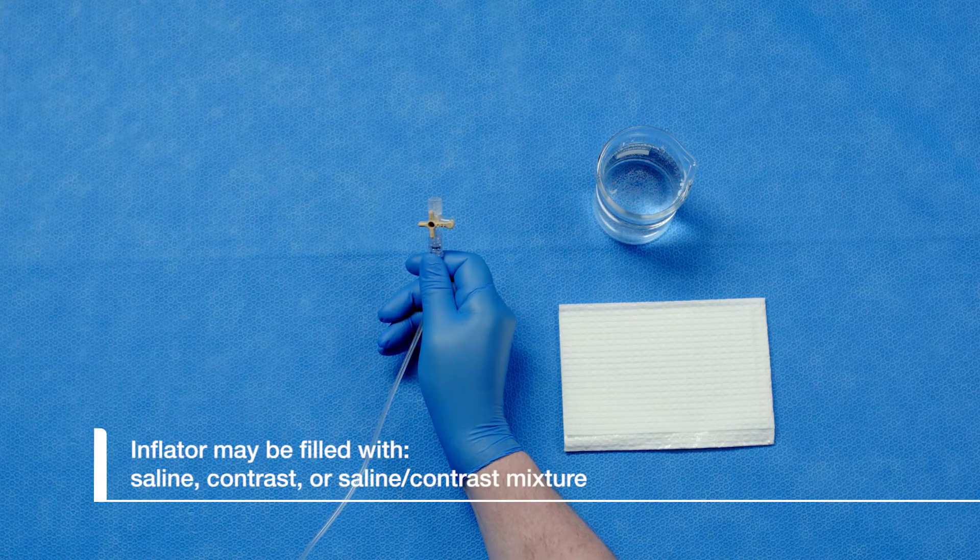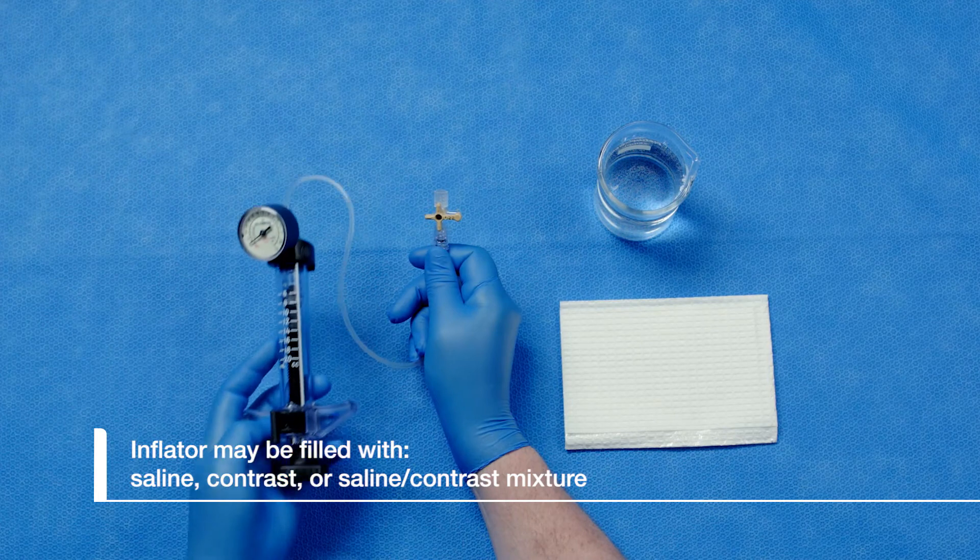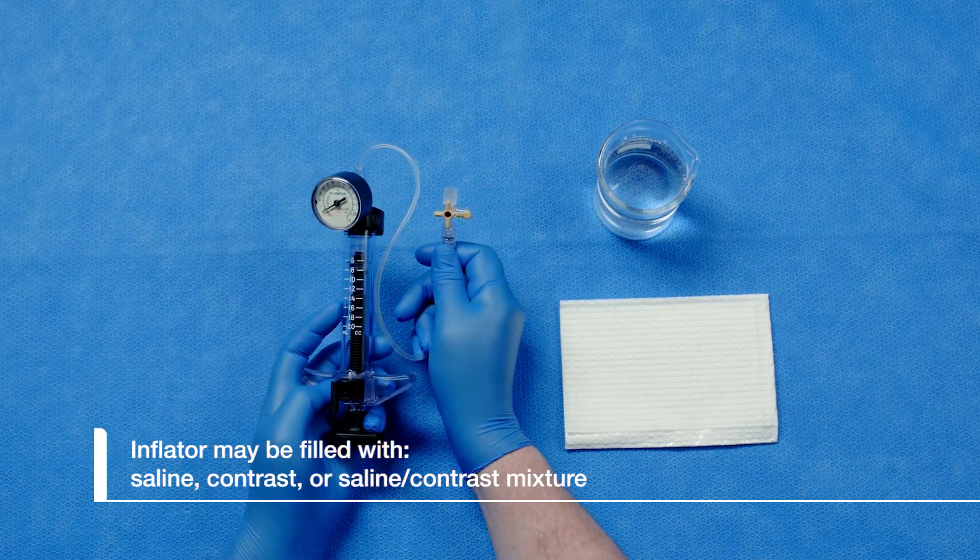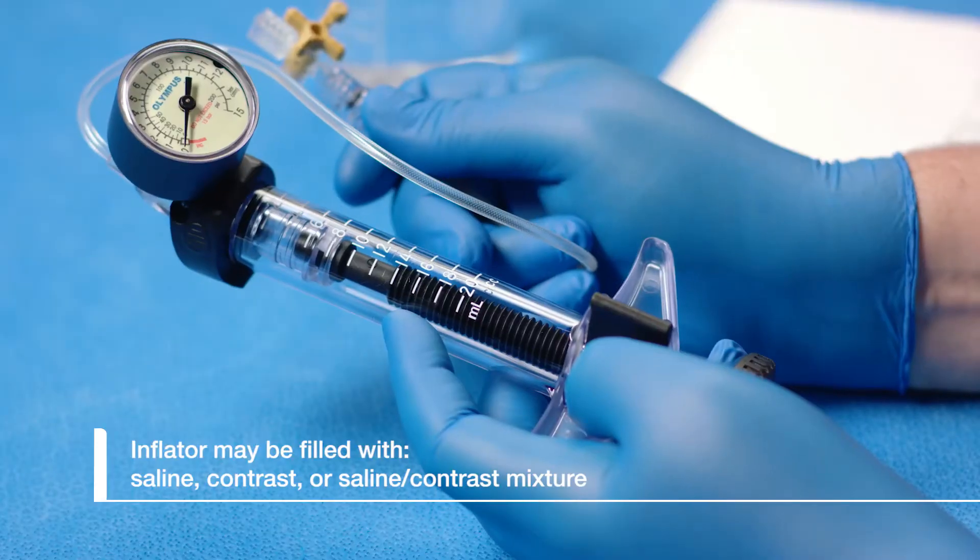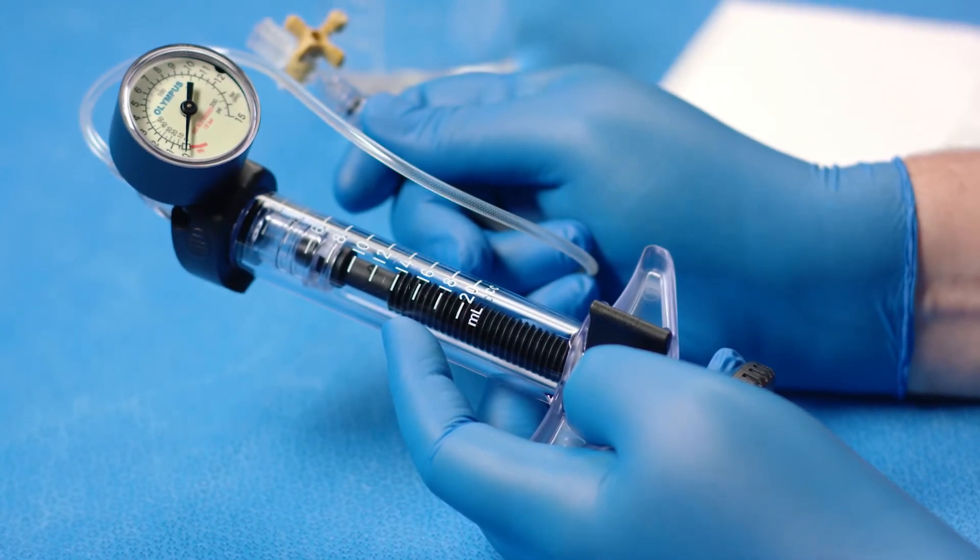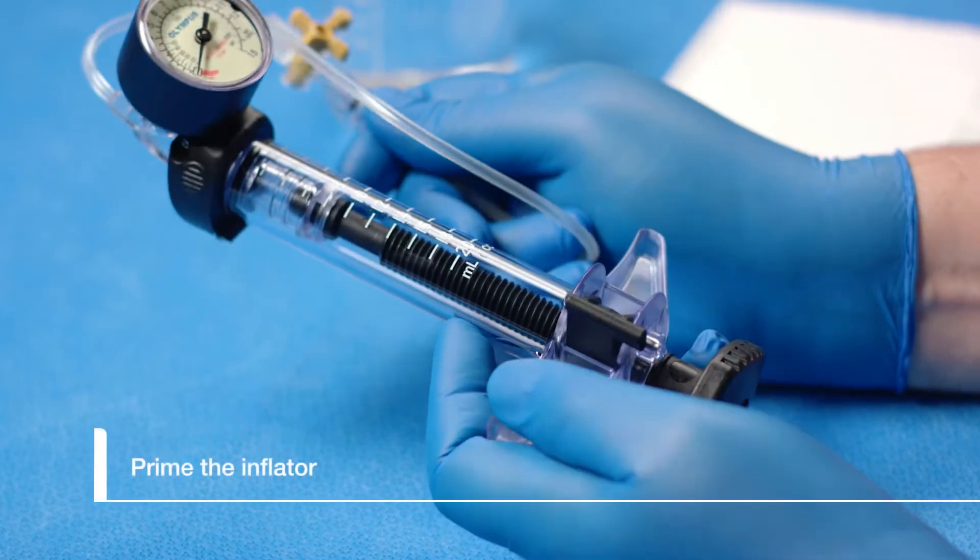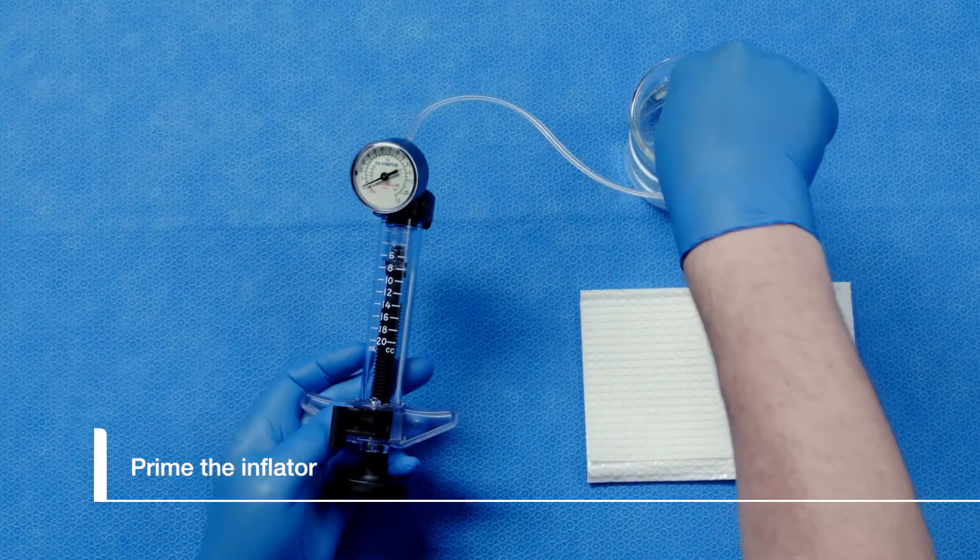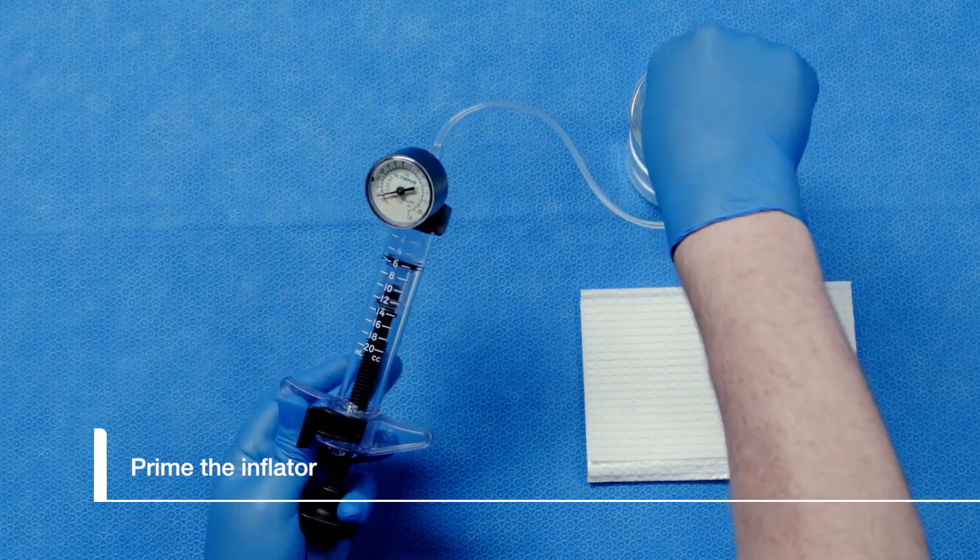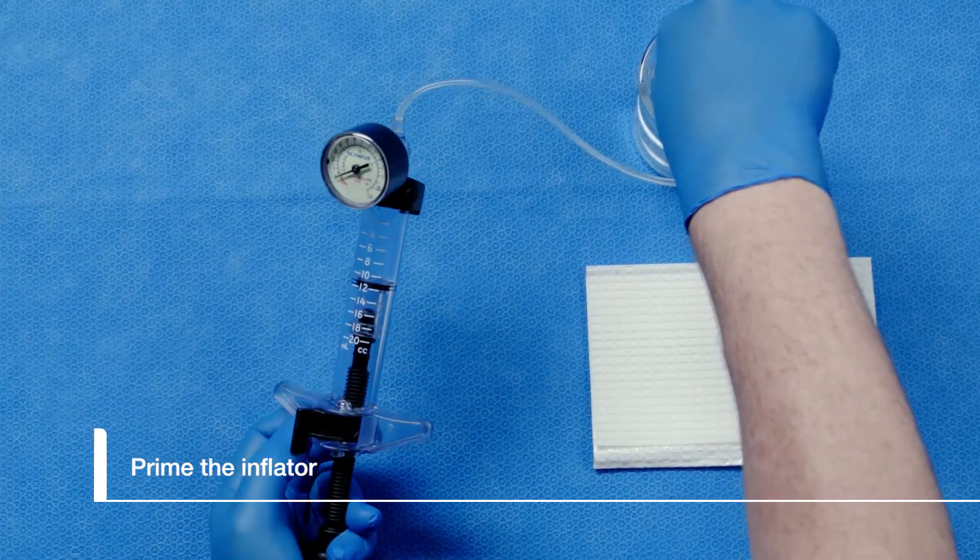The inflator can be filled with normal saline, contrast, or a mixture of saline and contrast. The inflator packaging can be used as a basin for the fluid. A syringe filled with fluid may also be attached to the T-piece. Ensure the locking switch on the inflator is in the left position and draw back the plunger until the inflator is filled with 12 milliliters of fluid.